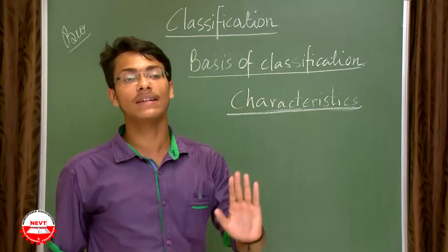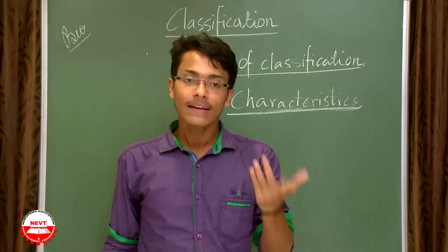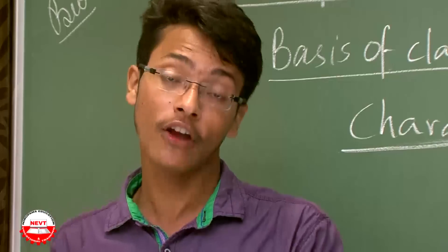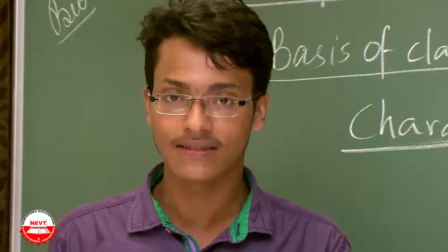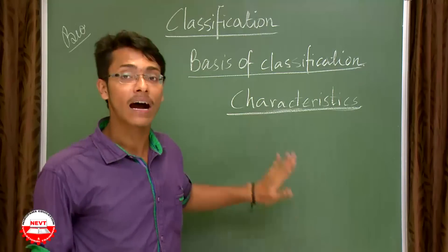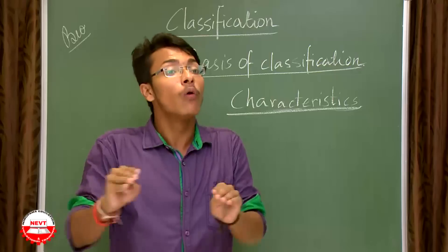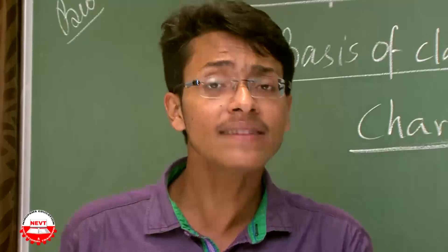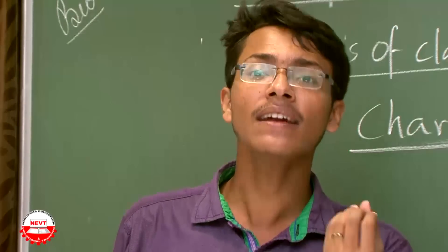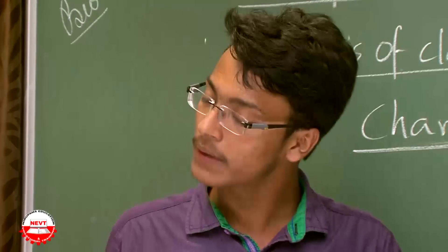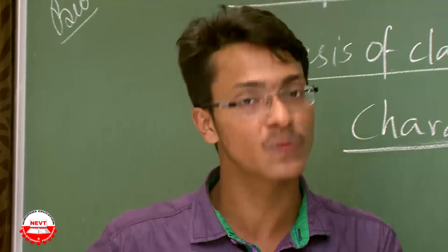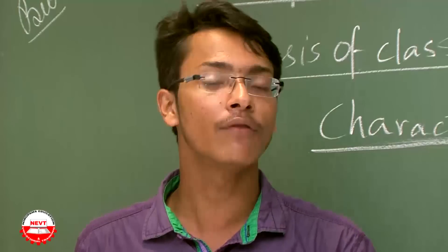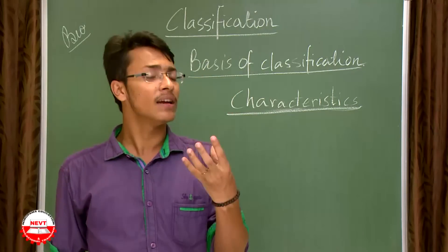Characteristics are the basis of classification for a biological system. For example, sometimes your teacher says you have a very bad characteristic of biting your nails. Jokes apart — characteristics are that platform upon which evidence is kept and classification is done. For instance, humans are characterized from plants on the basis of mobility: we can walk, plants cannot walk. We can also say we have five fingers in our hand, plants do not.